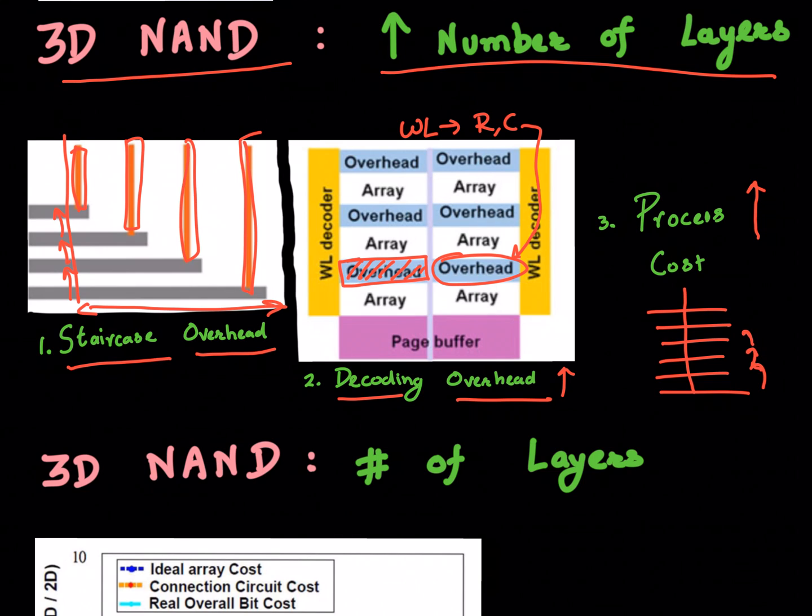If you have more and more of these layers, the process technology to both deposit these layers on top of each other in a very precise manner, etching a hole inside them so you can fill that up with your polysilicon channel—all of that is going to become more and more difficult, and the process cost is going to increase.